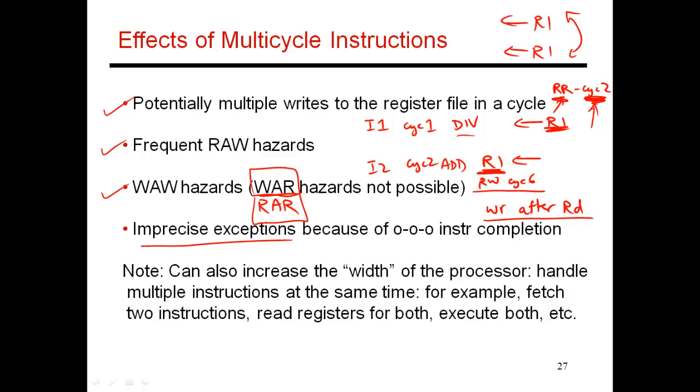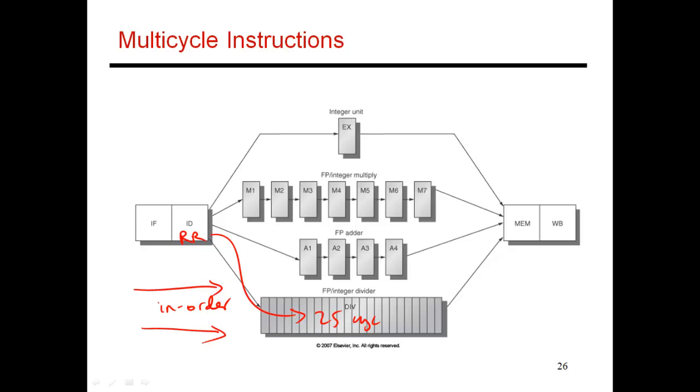Now let's get to this topic of imprecise exceptions. So what exactly is going on over here? As I said before, things are going in order over here, but there is out of order completion of instructions. And how does that possibly give rise to a problem? Let's take an example.